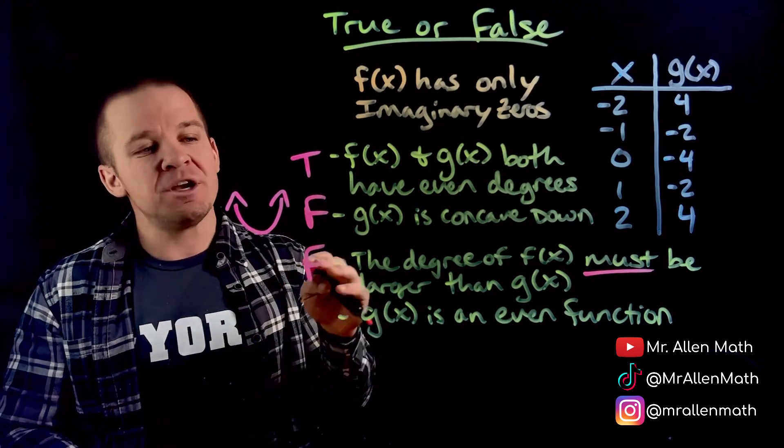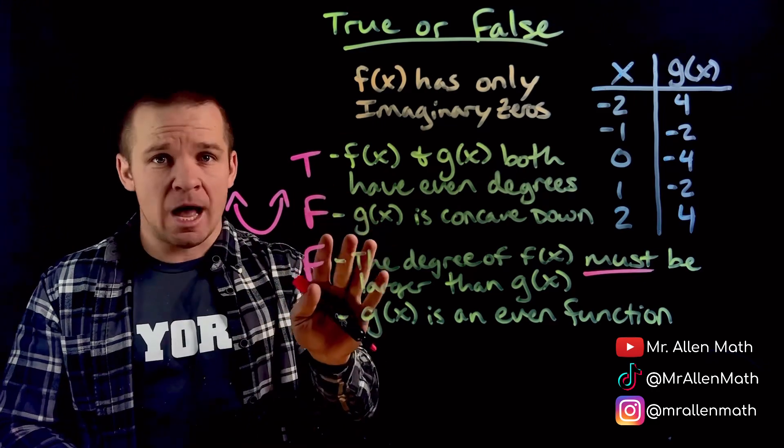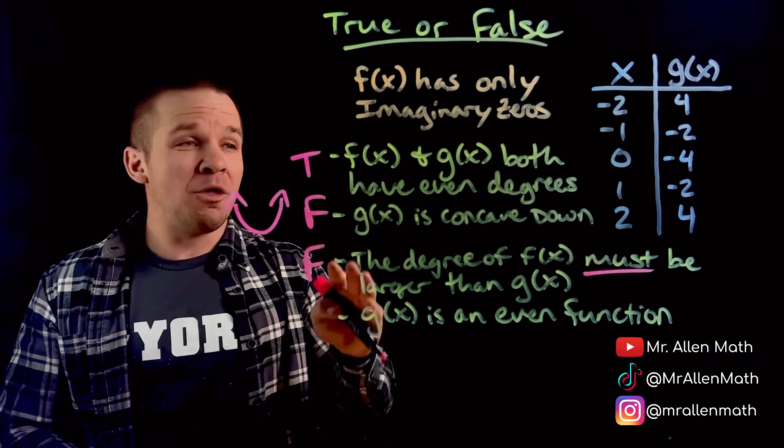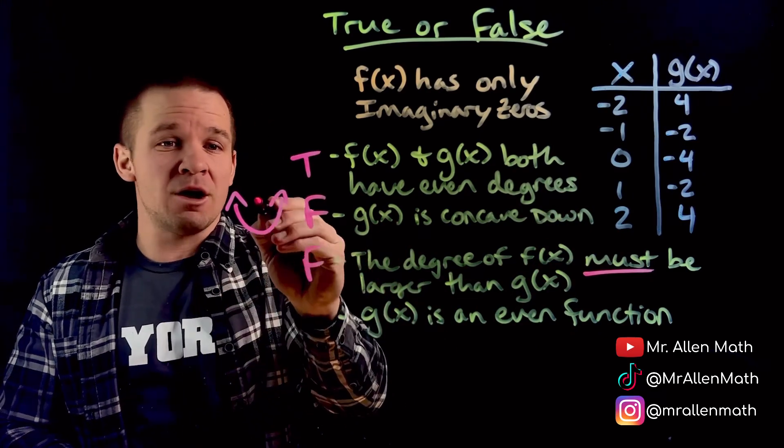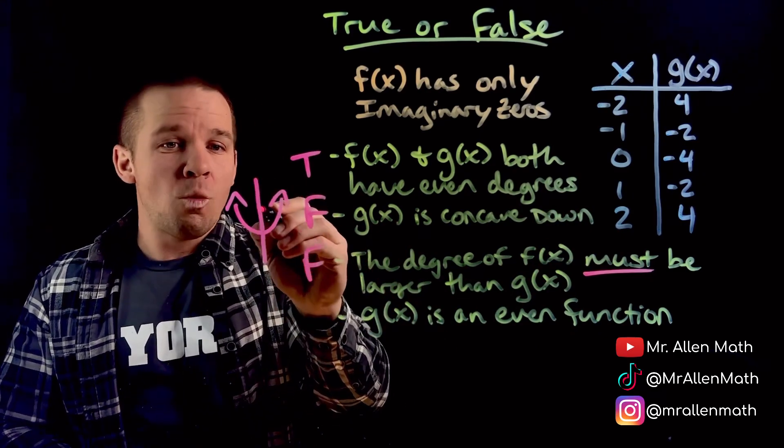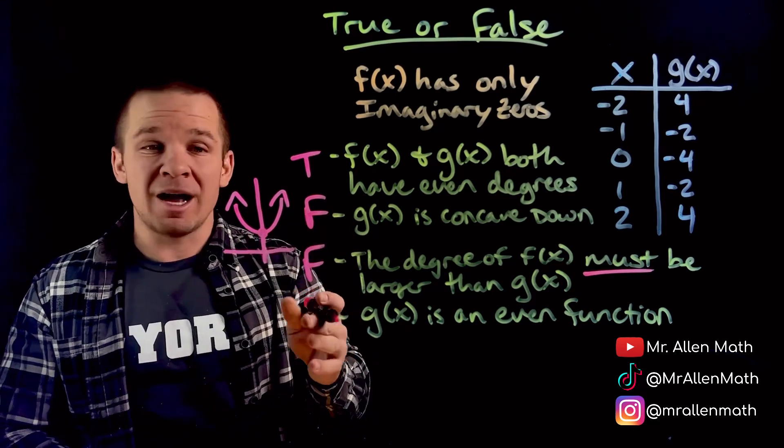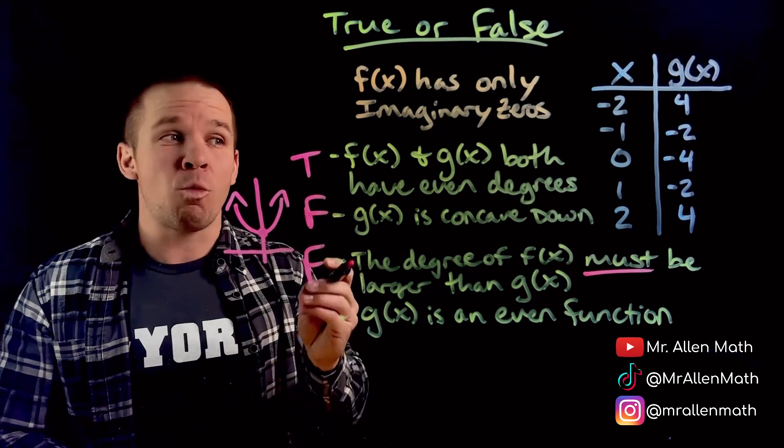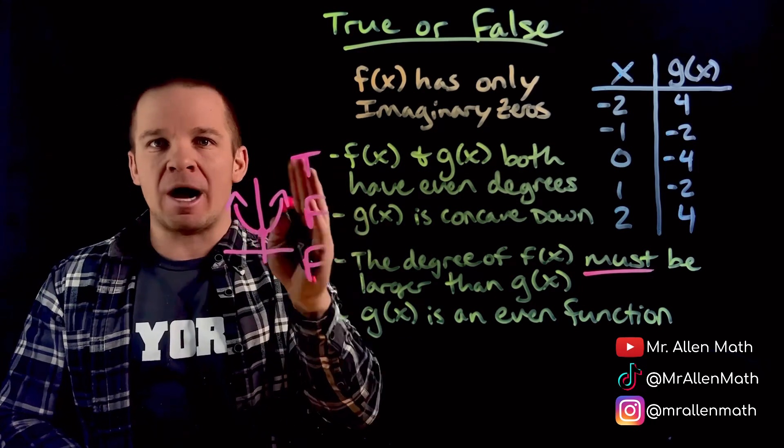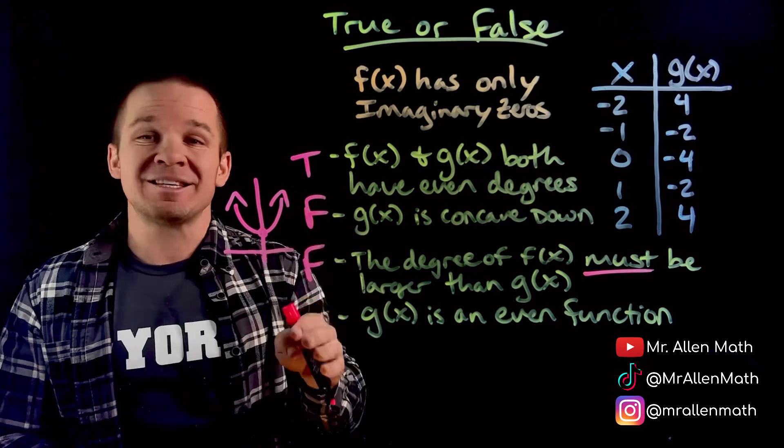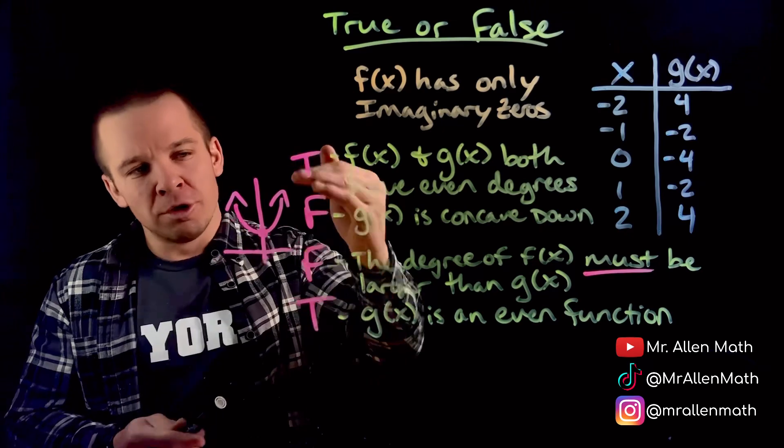Last one. G of x is an even function. Not even degree function. We already established that it is. But even, meaning symmetry. Well, this one right here, we got 0, negative 4. I'm going to use this bad boy right here. 0, negative 4, 1, 2, 3, 4. We are looking like we are sitting right there, for my vertex. It's sitting on that y-axis. Well, if it's sitting on that y-axis, it has symmetry over that y-axis. So g of x is going to be an even function. It's got that symmetry that is dope.